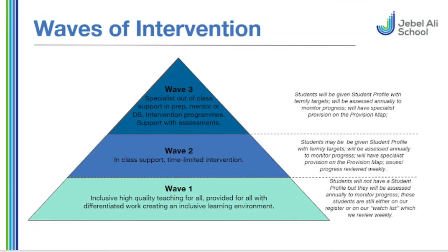When a child's name is added to the inclusion register, we categorise their support into levels: Wave 1, Wave 2 and Wave 3. That's our way of understanding the level, intensity and frequency of support that child will receive from our team, and also in terms of the support and communication we will be delivering with parents. Wave 1 means the child's needs can be met typically in class by their class teacher with some differentiation and suggestion by the inclusion team, but without any direct input from us.